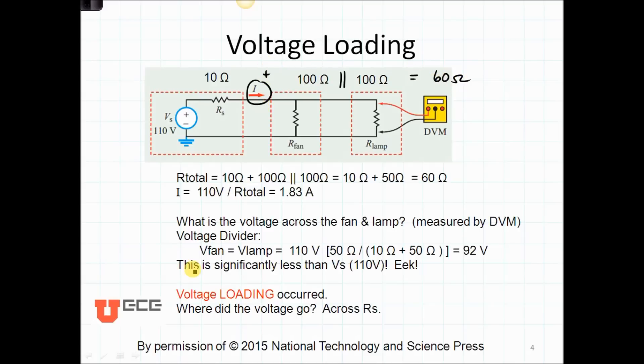If we consider the current here, that's 110 volts divided by the total resistance or 1.83 amps. Now let's consider what's the voltage across the fan in the lamp using a voltage divider. That's going to be the 110 volts times their 50 ohms, divided by 10 plus 50 or 60 ohms, which gives us 92 volts. Now wait a minute. That is significantly less than the voltage that we started with. That's called voltage loading.